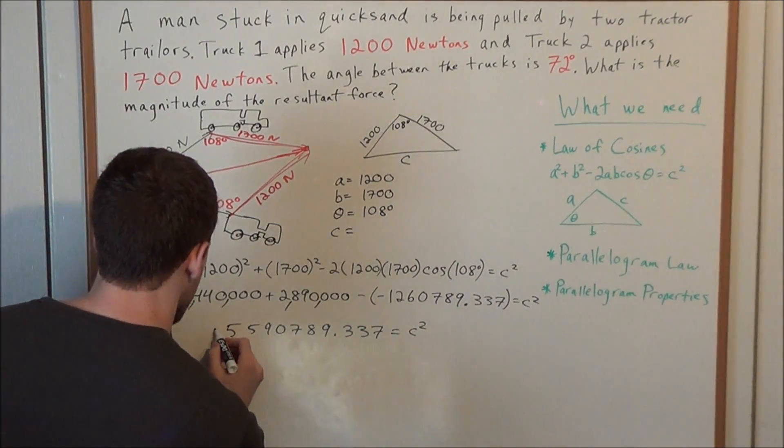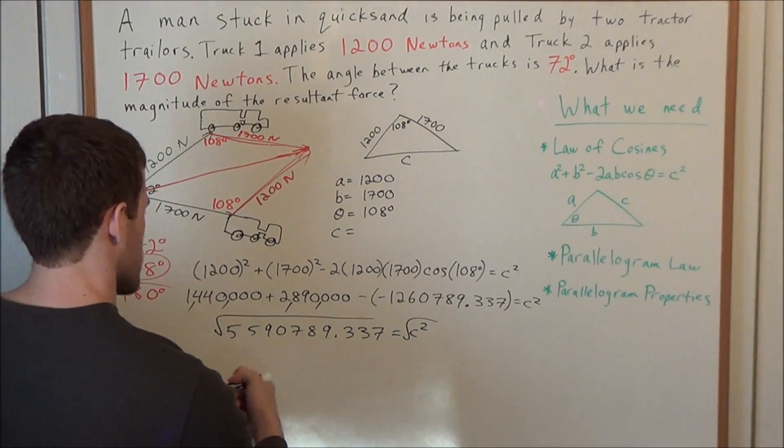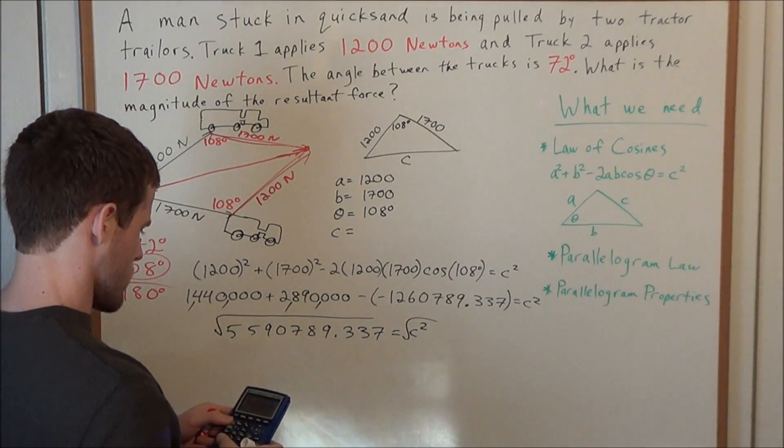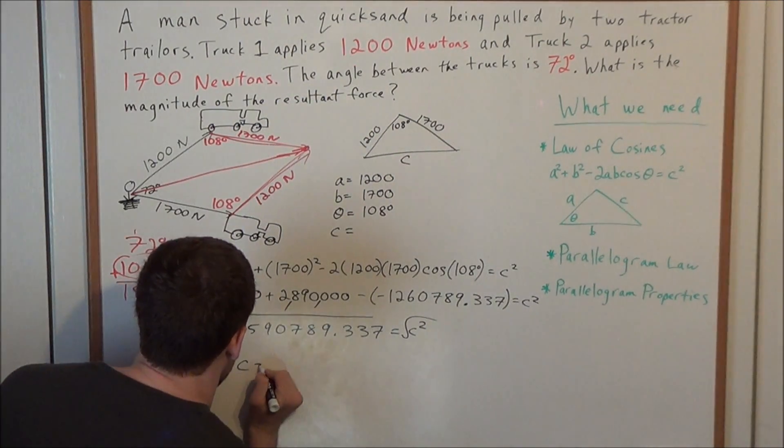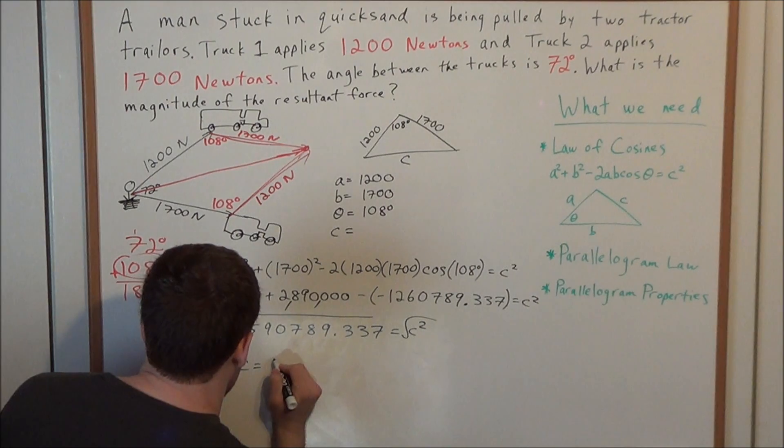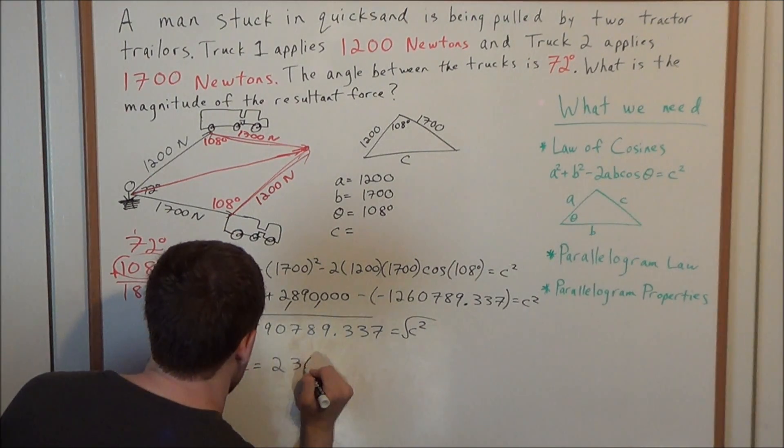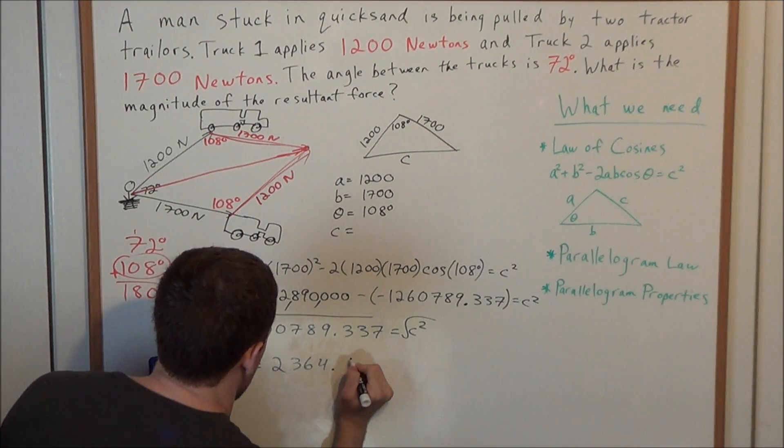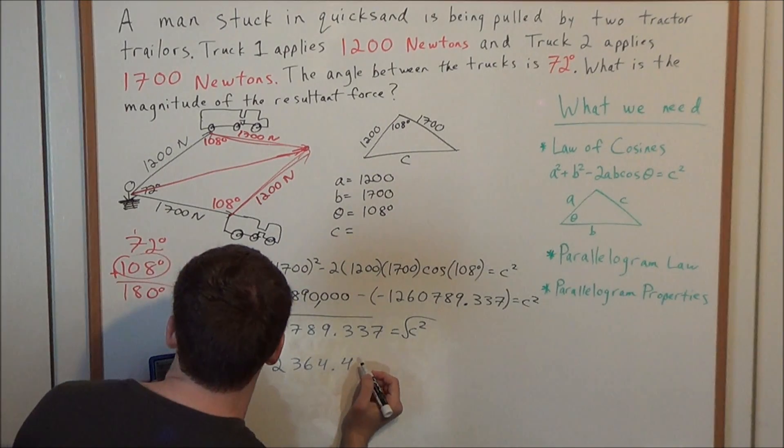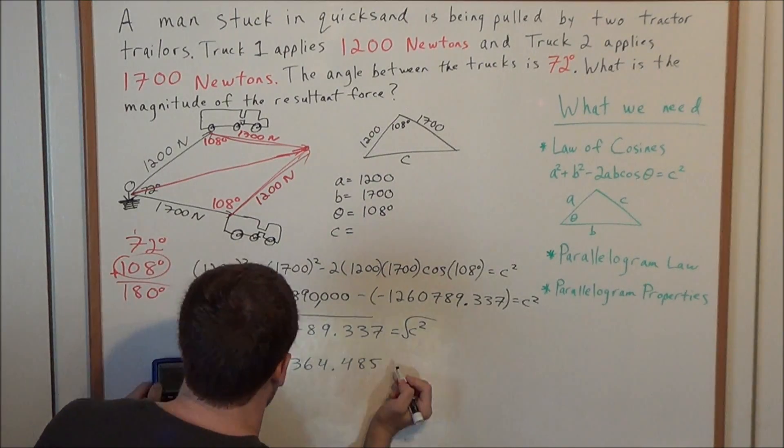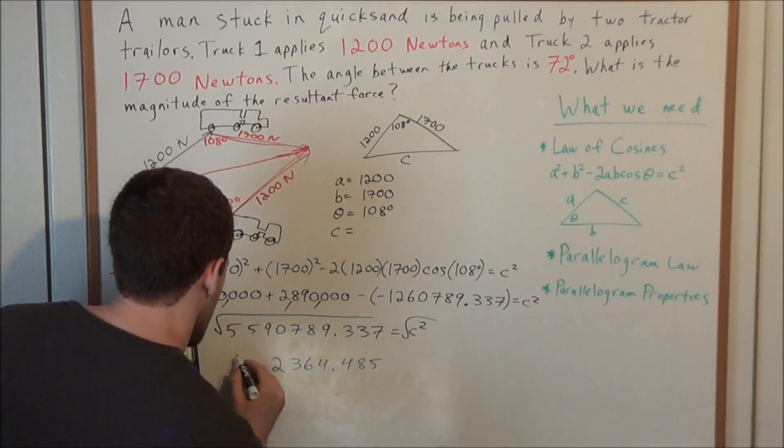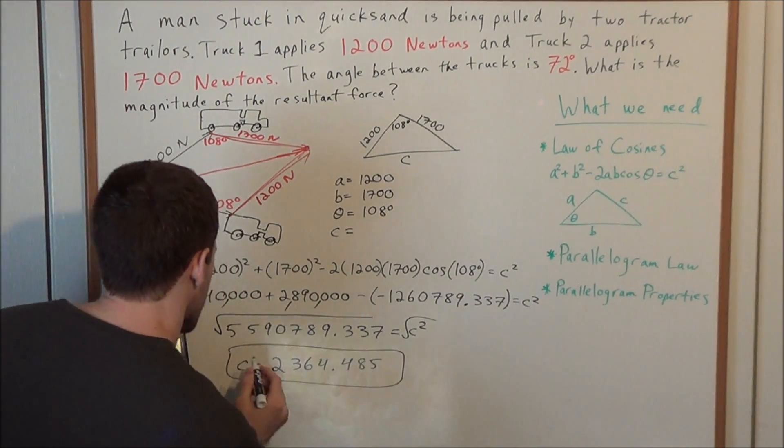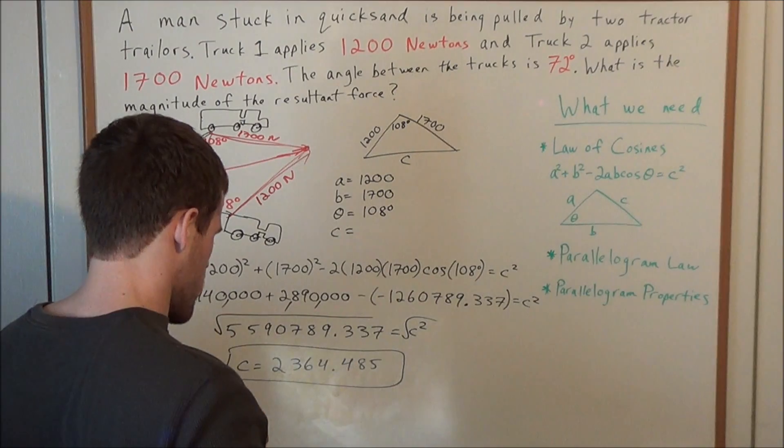So now what we need to do is take the square root of this enormous number, and what do we get? We get that C is equal to 2364 point, and I'll go to the thousandths place, 485, because we have 485005. So this value of C is in fact our resultant force.